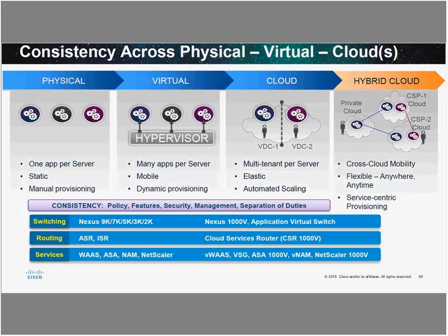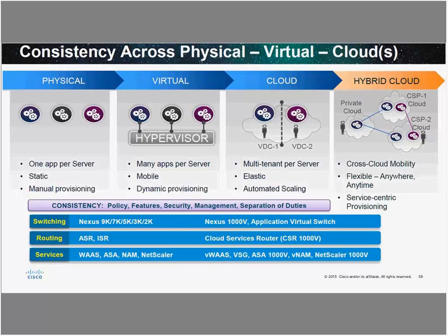With so much expansion and virtualized workloads, every physical component now has a virtualized product. You have ASR and ISR routers as CSR for the cloud, Nexus 7K/5K/3K switching with Nexus 1000V and AVS providing the same functionality that Nexus 9K hardware provides for ACI. From physical all the way to the hybrid cloud, whatever a physical device can do, Cisco has a virtual component for it — helping you grow into the cloud.